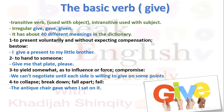Number one: to present voluntarily and without expecting compensation — bestow. For example: I give a present to my little brother. Here I don't want any compensation or any reward, because I love him. Number two: to hand to someone.